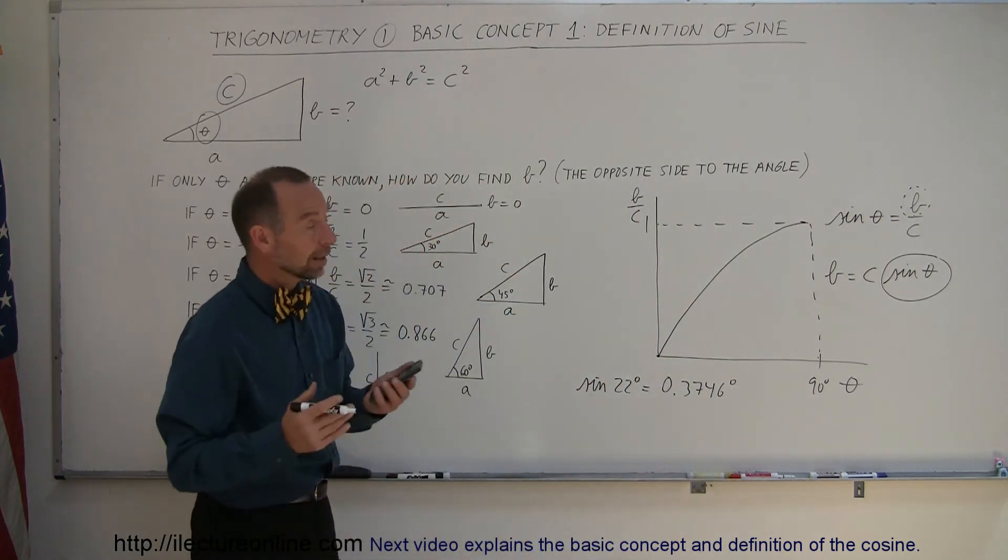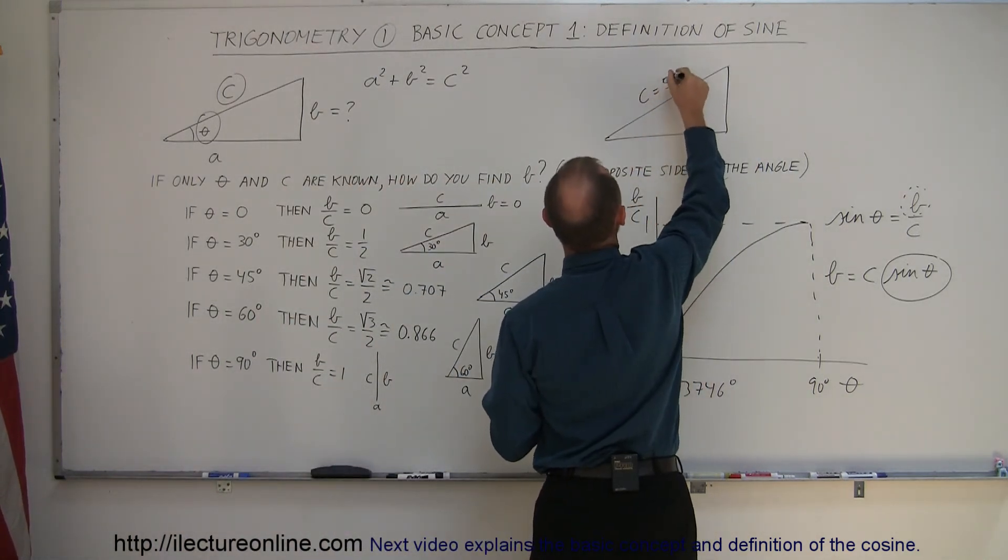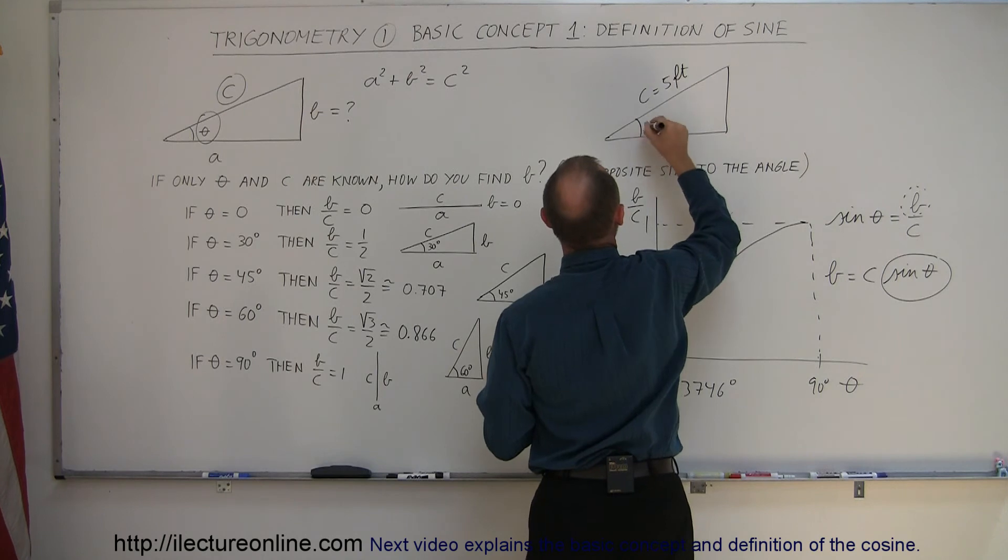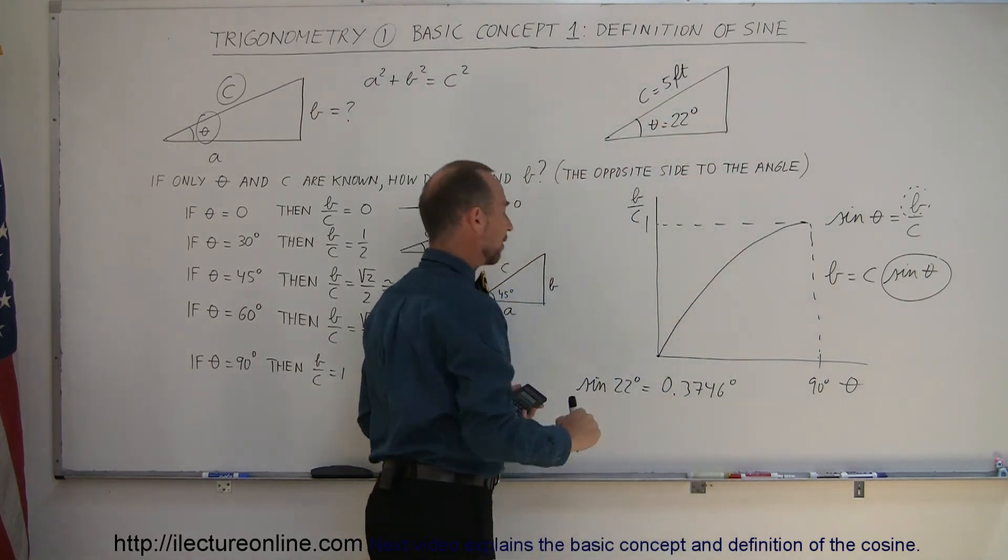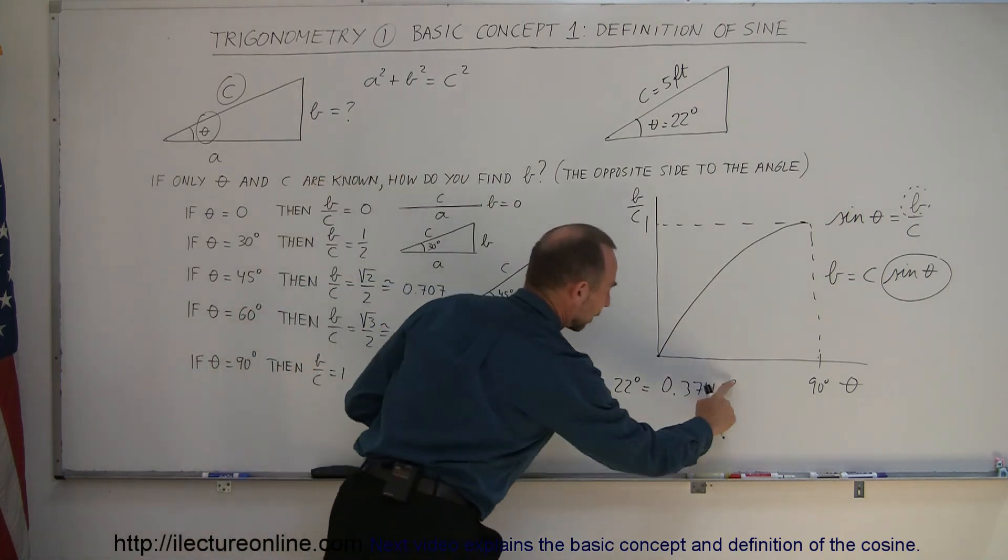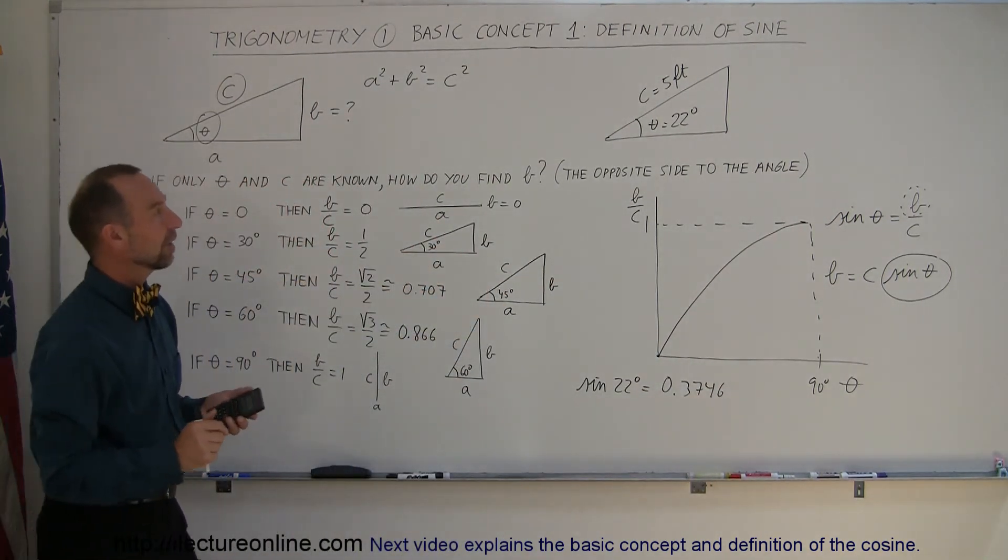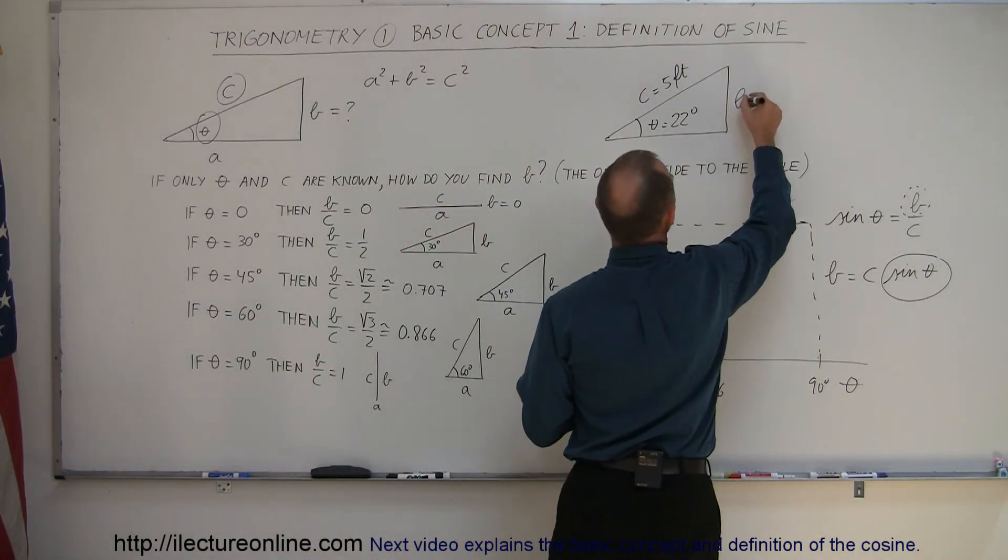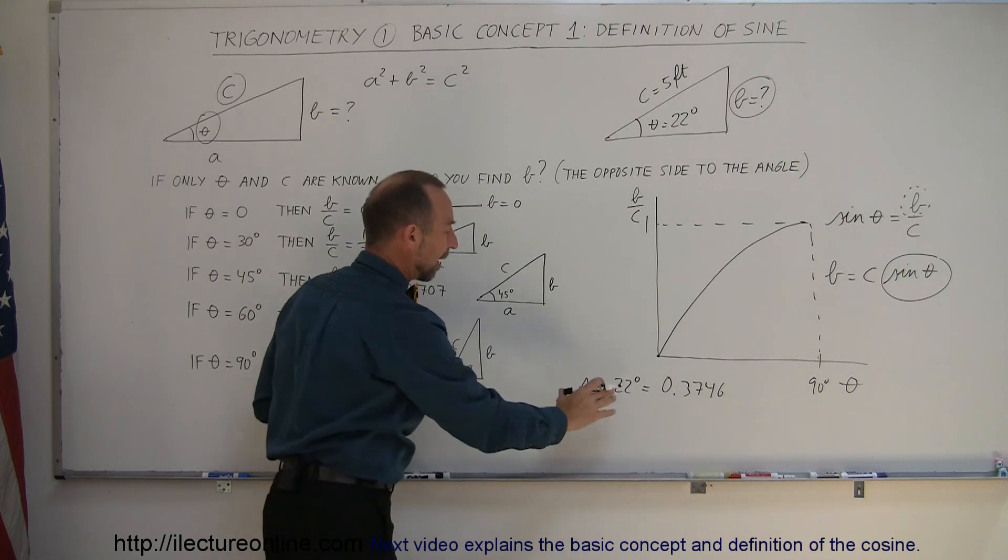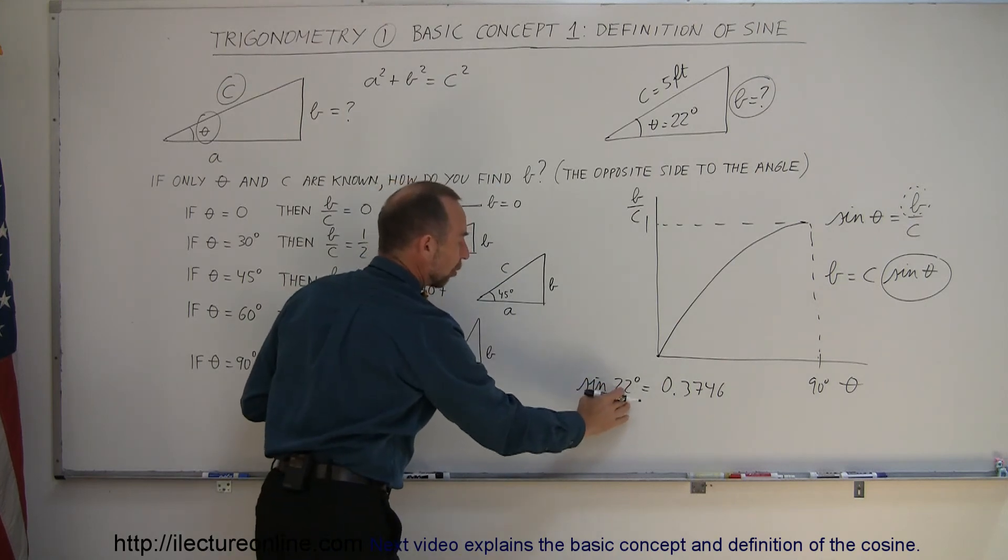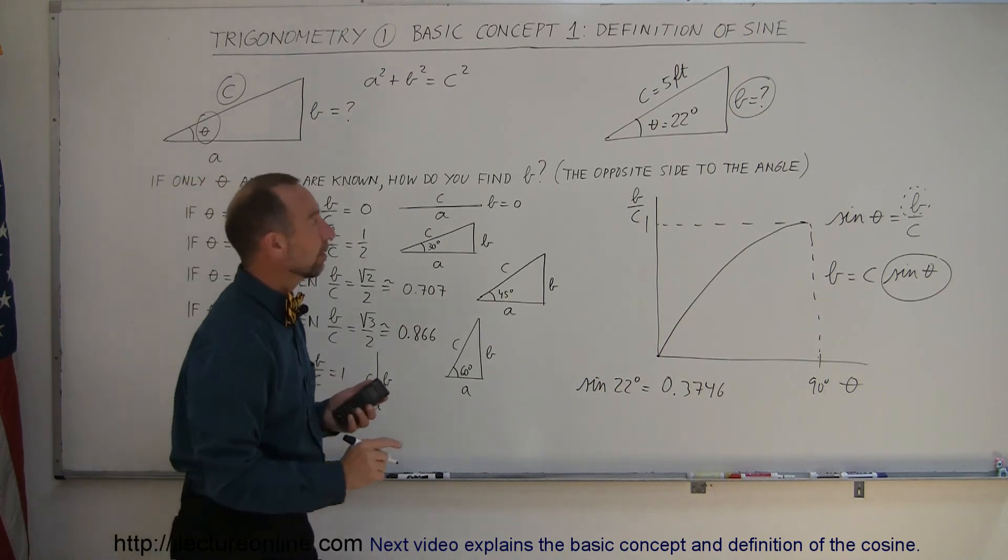As an example, let's say I have a triangle and I know that the hypotenuse C equals 5 feet, and the angle theta equals 22 degrees. I want to know what B is. Since I have a function that defines the ratio of B over C as this angle, I can then say B equals the hypotenuse, which is 5 feet, times the sine of 22 degrees.